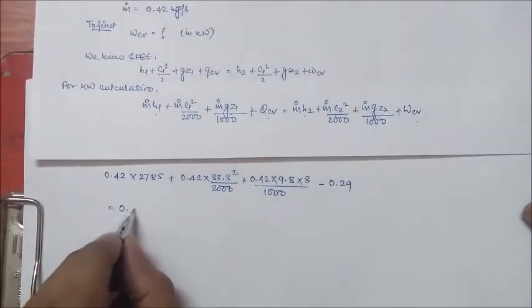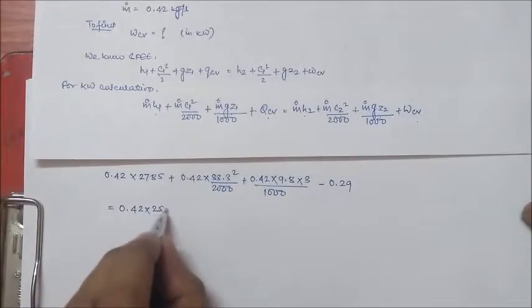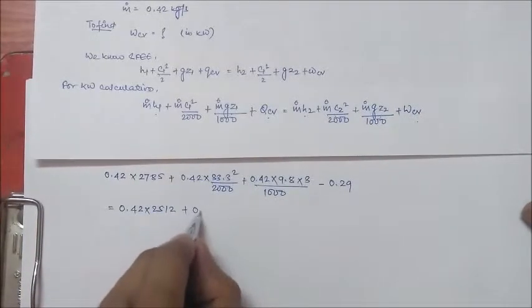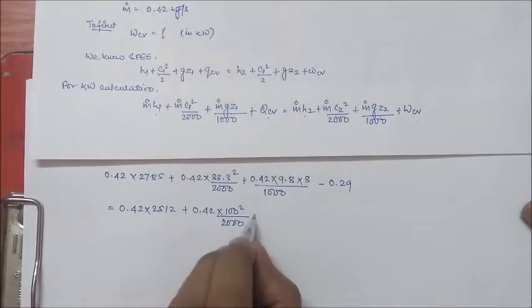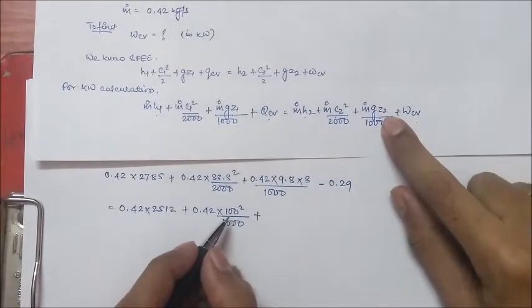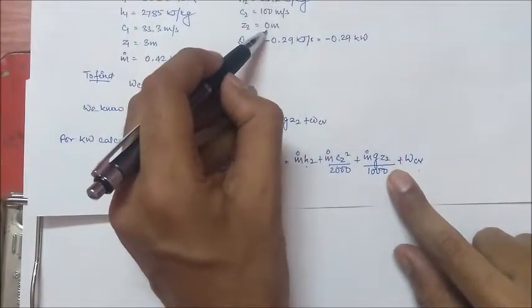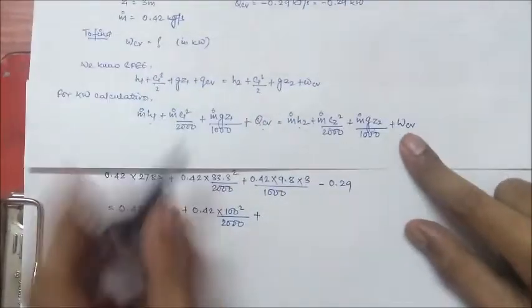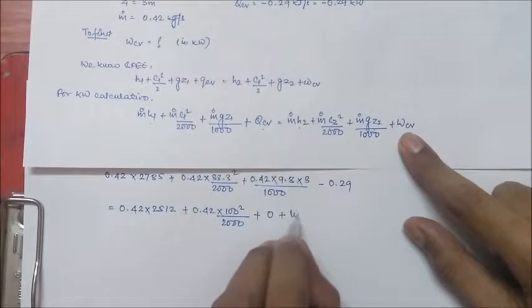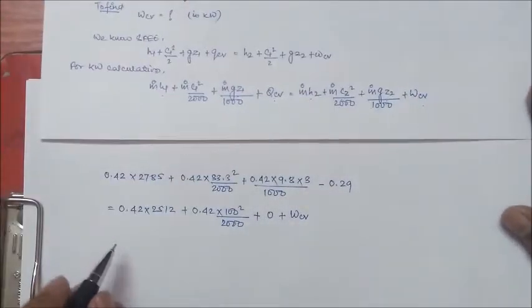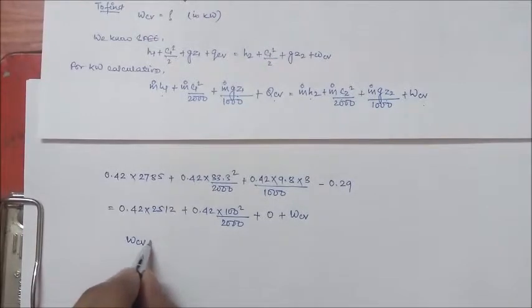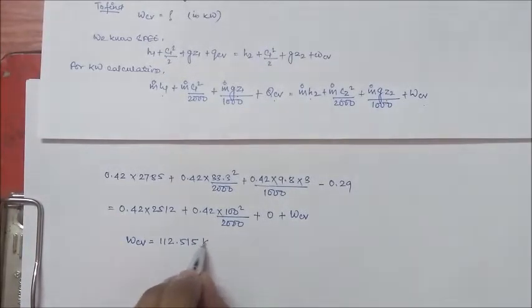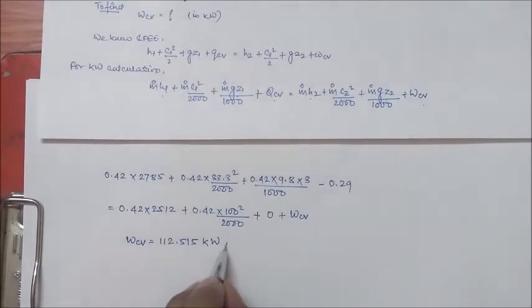This is equal to 0.42 into H2, which is 2512, plus 0.42 into 100 square by 2000. Now Z2 is zero meter, so this value will be 0, plus WCV. If you calculate this, you will get WCV as 112.515 kilowatt. This is your answer.